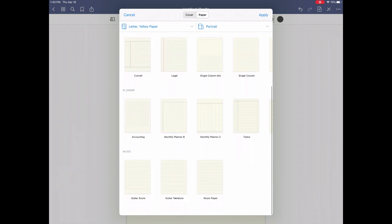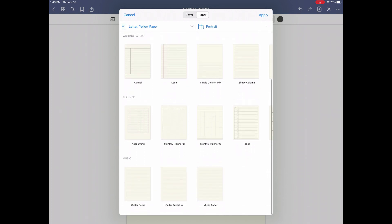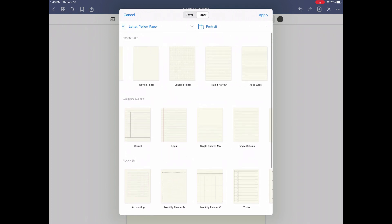but also things like Cornell and legal and single column or double column, weekly planners, monthly planners. Those make for really nice starting points. And it's cool that they've included that much variety. All of those different potential applications.